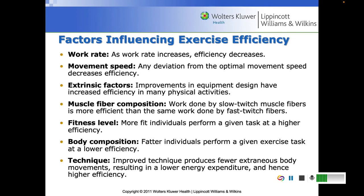Any deviation from optimal movement speed will decrease your efficiency. For example, for walking, the optimal speed is under 4.0 miles per hour, and it becomes more mechanically efficient to run once you get past four miles per hour. Extrinsic factors also matter — improvements in equipment have increased efficiency in many physical activities. What type of muscle fibers you have is also relevant.